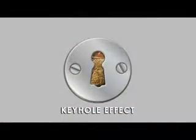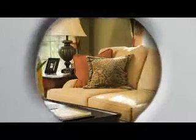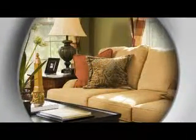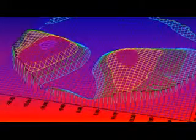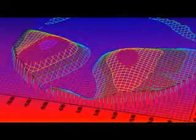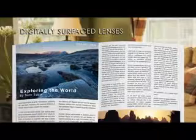This creates what is referred to as the keyhole effect. For example, if you were to peer through a keyhole, the closer your eye gets to the hole, the greater your field of vision and the more you're able to see. Digitally surfaced lens designs work the same way. By moving the design onto the back of the lens, patients are enjoying widened channels of up to 20% for intermediate and reading.